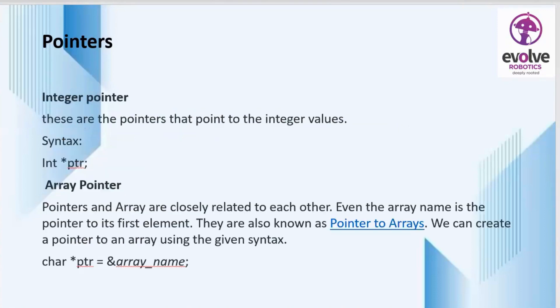The first type is integer pointers. These are pointers that point to integer values. Integer pointers are used to point to integer values. The syntax specifies the data type as int, followed by the pointer variable name.